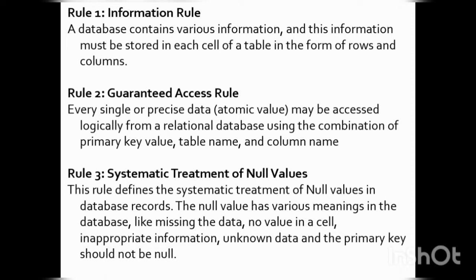The third rule is Systematic Treatment of Null Values. This rule defines the systematic treatment of null values in database records. Null values have different meanings in a relational database system, such as missing data, no value in a cell, inappropriate information, or unknown data. Also, the primary key should not be null.